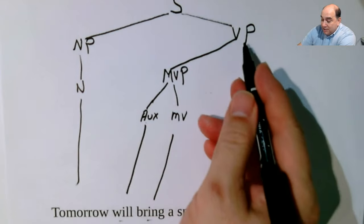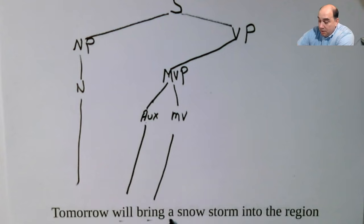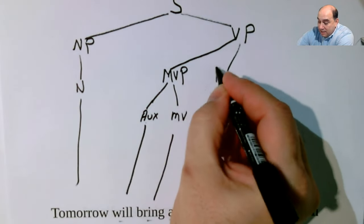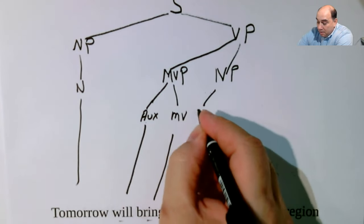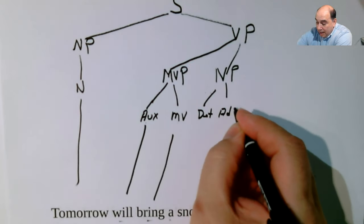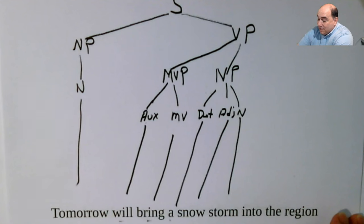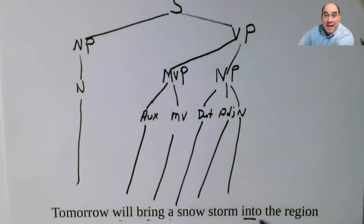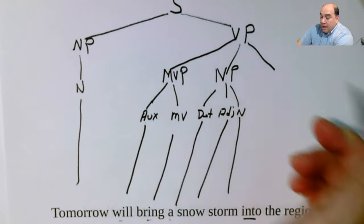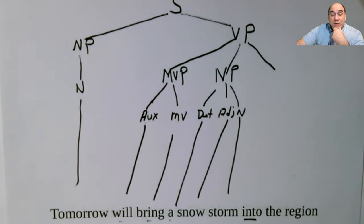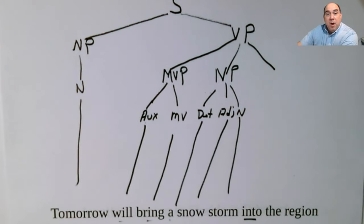The next thing we have under our verb phrase is 'a snowstorm.' Well, that's going to be a noun phrase. This noun phrase is broken down into a determiner, an adjective, and a noun. The determiner is 'a,' then 'snow,' then the noun is 'storm.' Last thing here is 'into the region.' 'Into' is a preposition. Again, you're going to ask yourself: what's its form and function? 'Into the region' — is it describing a storm, or is it describing what is being brought? Is the storm being brought into the region, or is 'into the region' describing where it's going to be brought?